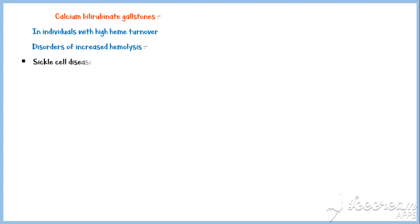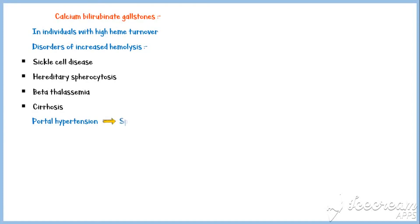Formation of calcium bilirubinate gallstones occurs in individuals with high heme turnover. Disorders of increased hemolysis include sickle cell disease, hereditary spherocytosis, beta-thalassemia, and cirrhosis. In cirrhosis, portal hypertension leads to splenomegaly, which in turn causes red cell sequestration, leading to a moderate increase in hemoglobin turnover.